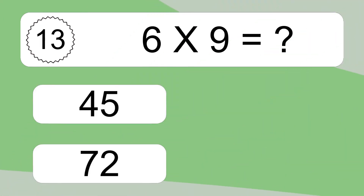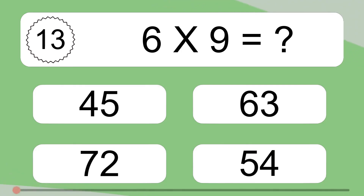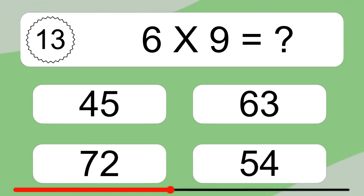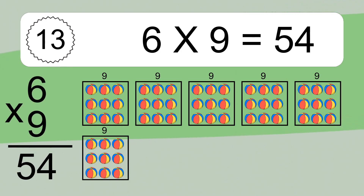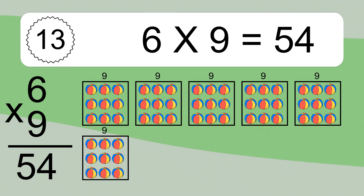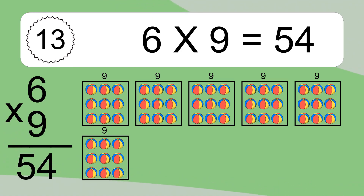6 times 9 equals what? We have 6 boxes, and each box has 9 colorful balls inside. If you count all the balls in all the boxes together, you will have 6 times 9 balls. This equals 54 balls.